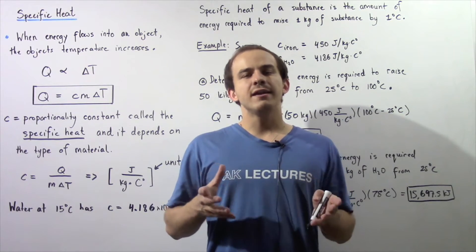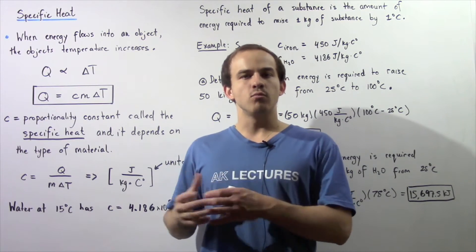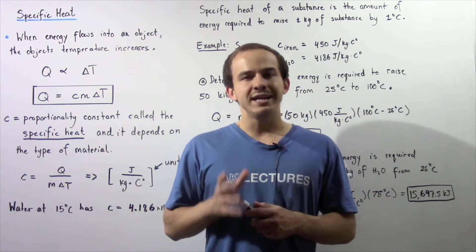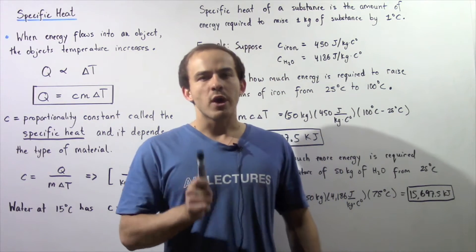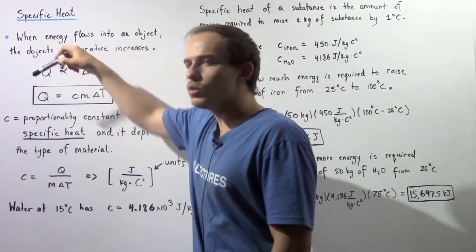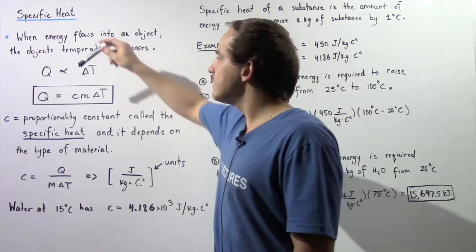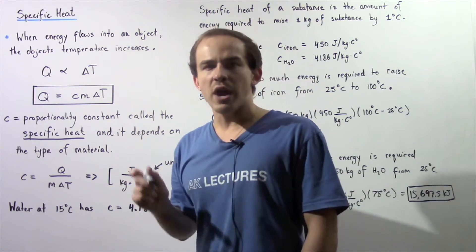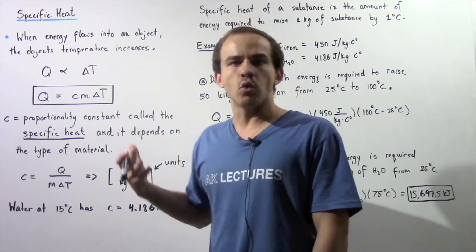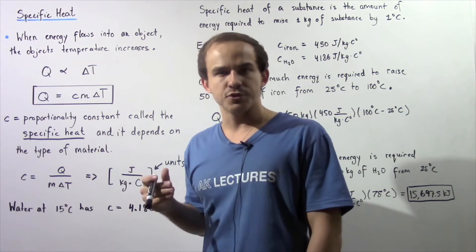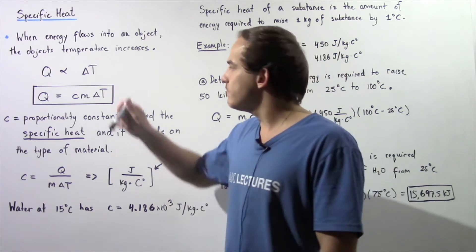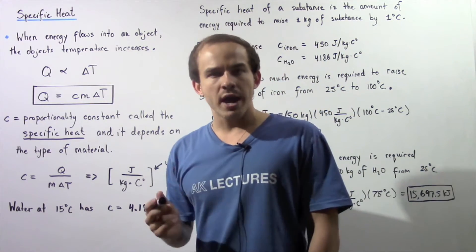Generally speaking, whenever energy flows into a system or object, that system or object's temperature will increase. So there is a direct relationship between the amount of energy that flows into our system, given by the capital letter Q, and the change in temperature that our object or system experiences. The exact relationship is given by the following equation.